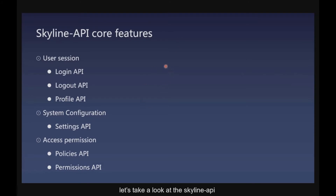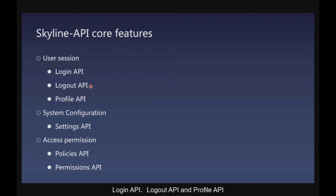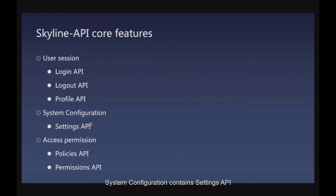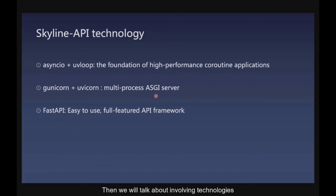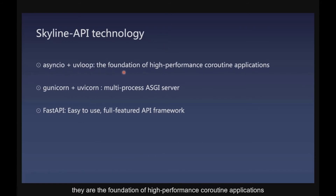After talking about Skyline UI, let's look at Skyline API. It has three core features: the user session part contains login API, logout API, and profile API. System configuration contains settings API. Access permission contains policies API and permissions API. For the underlying technologies: AnyIO and UvLoop are the foundation of high-performance coroutine applications. Gunicorn Core and UvicornWorker are multi-process ASGI servers. FastAPI is used to build the easy-to-use, feature-rich API framework.